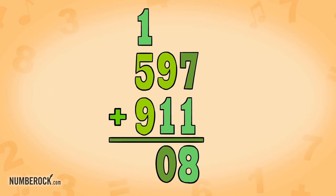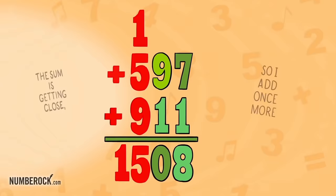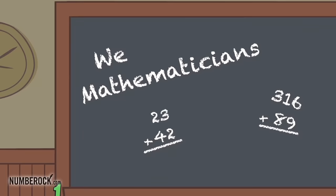so I add one score. 1 plus 5 is 6, plus 9 is 15. My little brother thinks they're a good source of protein. We mathematicians